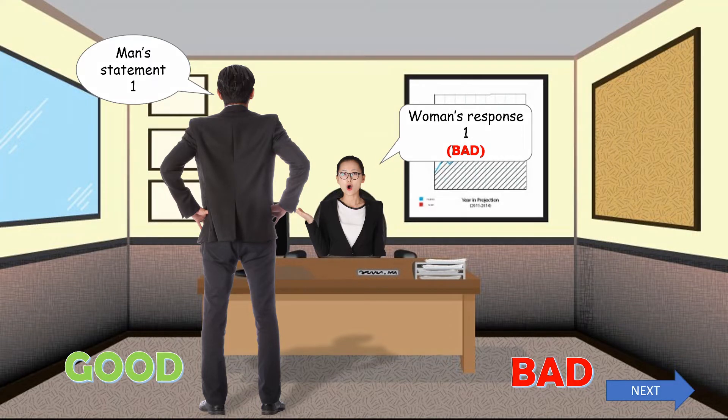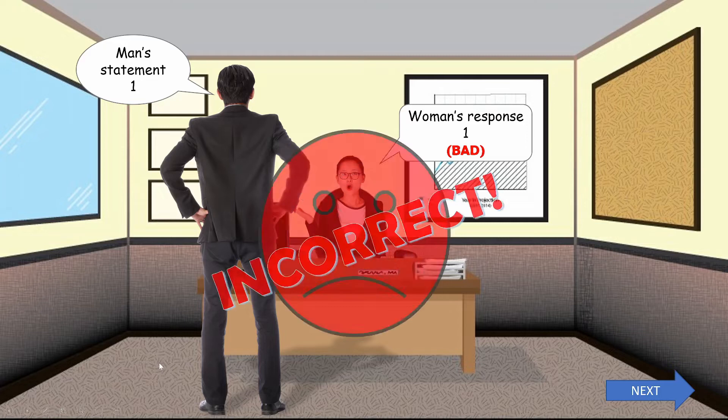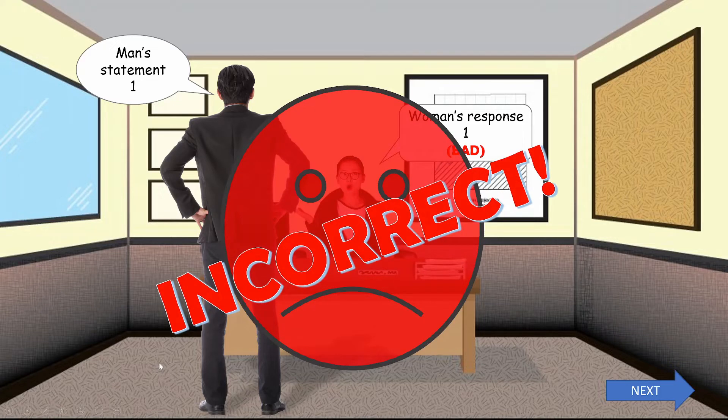This is how the slide should work. The students see the woman's response and give the incorrect answer that it is good. When clicking on the word good, the slide responds like this. Having got the answer wrong, they can move on to the next slide if there is one.